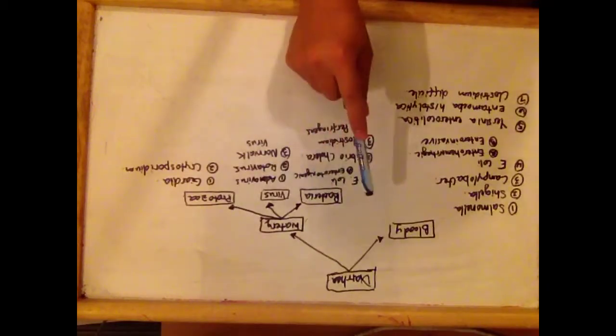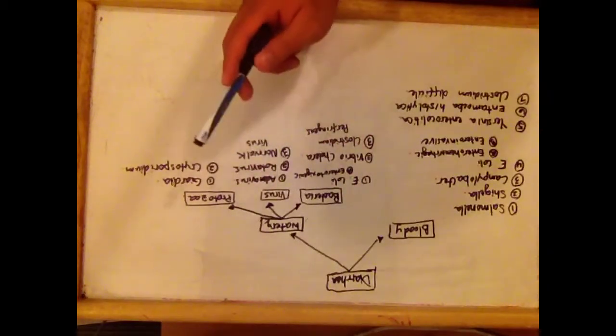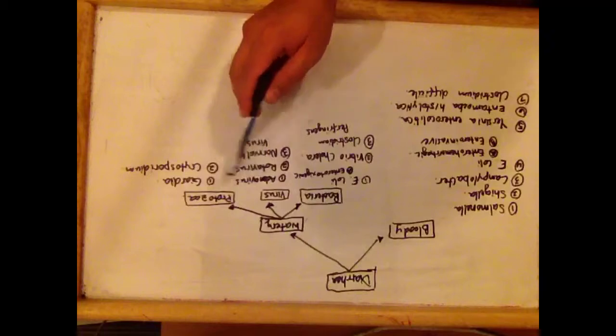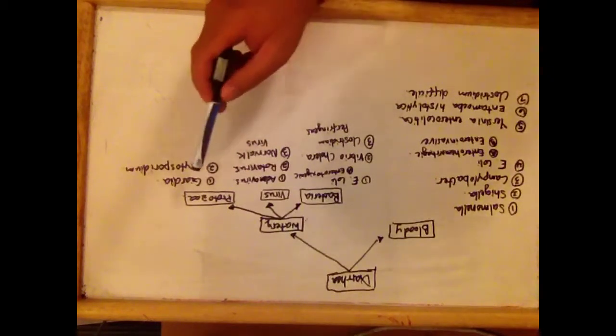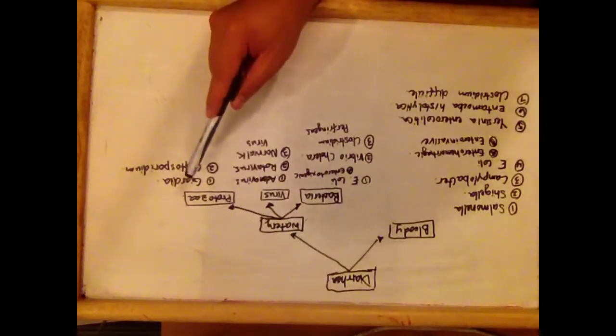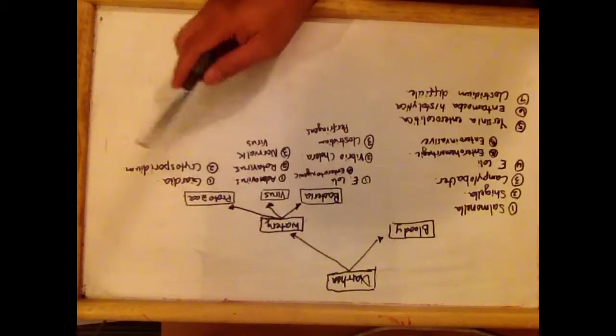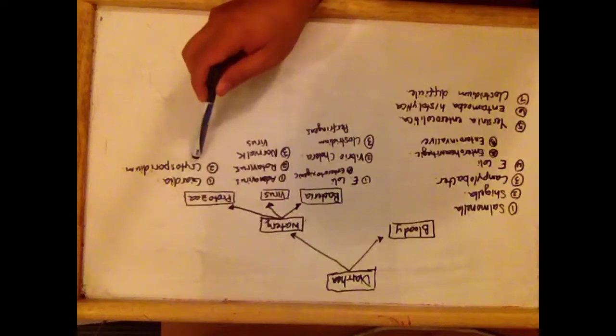Viruses that cause watery diarrhea are Adenovirus, Rotavirus, and Norwalk virus. Protozoa that cause watery diarrhea include Giardia and Cryptosporidium.